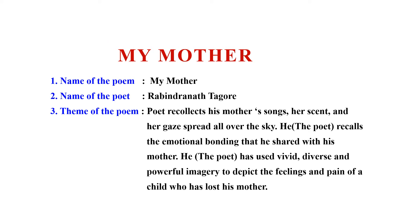Let us learn how to write a choreography script for the poem My Mother. First point — name of the poem: My Mother. Second — name of the poet: Rabindranath Tagore. Third — theme of the poem: this poem tells us about a boy who has lost his mother at a very young age. He recollects his mother's song, her scent, and her gaze spread all over the sky. He recalls the emotional bonding shared with his mother. The poet has used vivid, diverse, and powerful imagery to depict the feelings and pain of a child who has lost his mother.